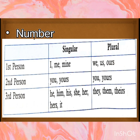In third person, singular will be he, him, his for male; she, her, hers for female; and it will be used for non-living things. In plural, we use they, them, theirs.